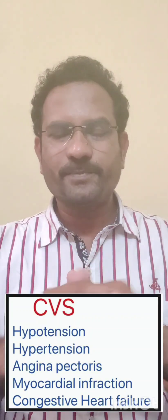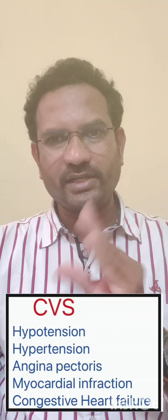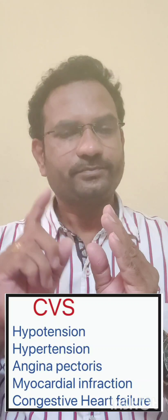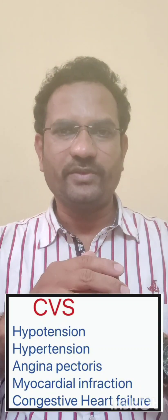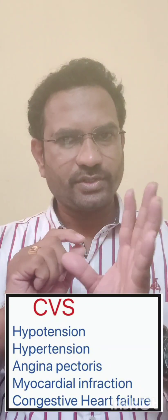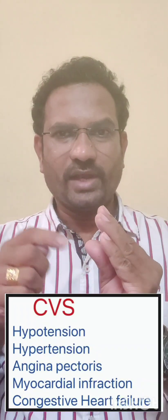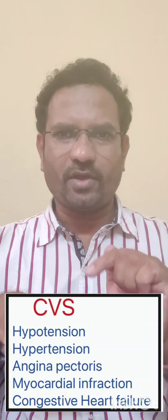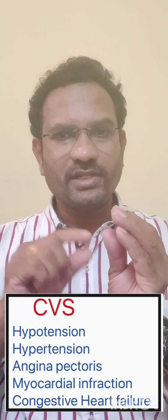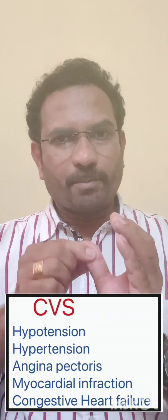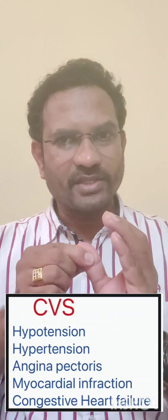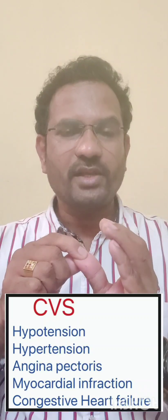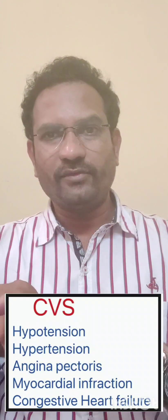Coming to angina pectoris — the heart continuously contracts and relaxes, and for that it needs energy, which is provided by blood circulation through the coronary blood vessels. When blood circulation is reduced, the oxygen supply to the heart is reduced, and that causes chest pain, known as angina pectoris. When blood supply to the heart is reduced further, the muscle of the heart gets damaged — that is called infarction, and the condition is called myocardial infarction.